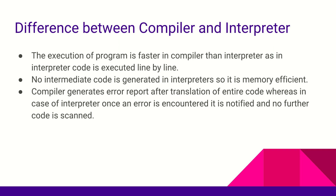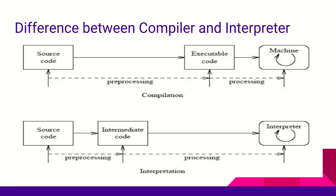Looking at a diagrammatic representation: in compilation, your source code is converted into an executable, which the CPU then executes directly. In interpretation, your source code is converted into an intermediate code, which the interpreter then executes line by line — converting each line into machine-level code and executing it via the CPU.